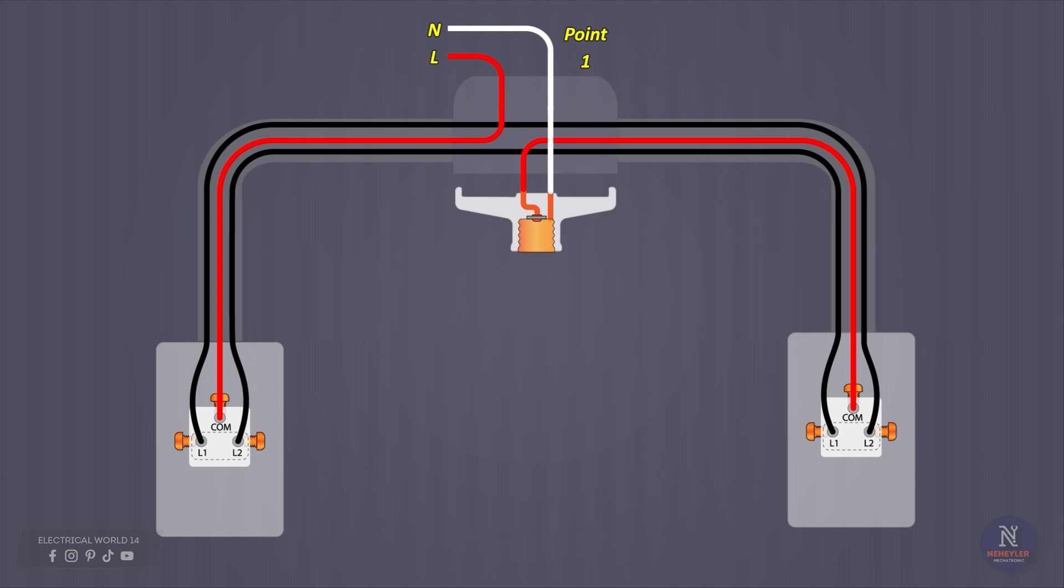If you do not know which is the phase cable, you can detect it with a pole finder, which is sold in any hardware store. If in this case you have two phases, there is no problem, anyone can go. And if you connect the neutral to the switches, it will still work, but it is suggested that you make the connection as indicated.